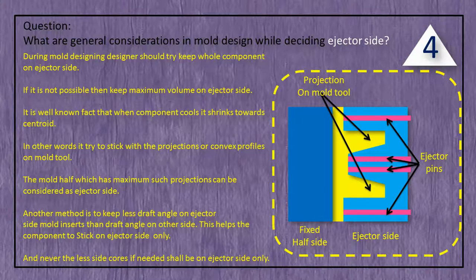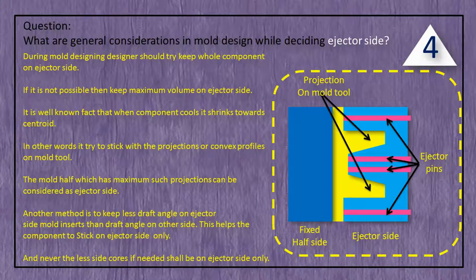The mold half which has maximum such projections can be considered as the ejector side. Another method is to keep less draft angle on ejector side mold inserts than the draft angle on the other side. This helps the component to stick on the ejector side only, each time.